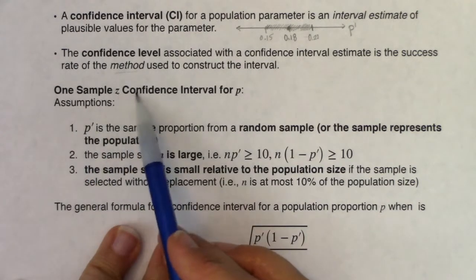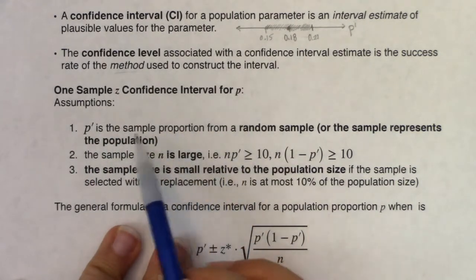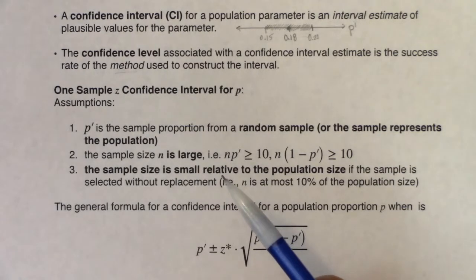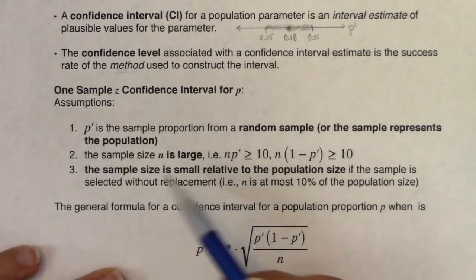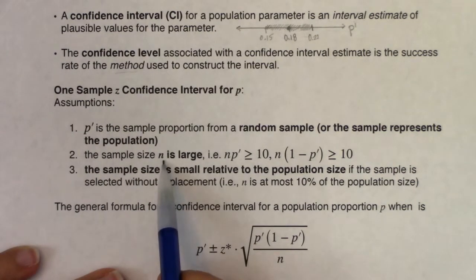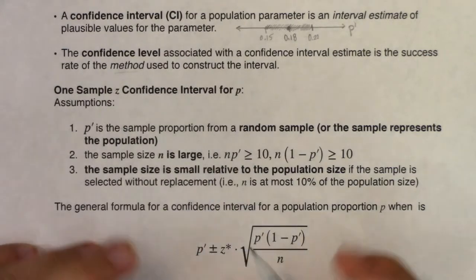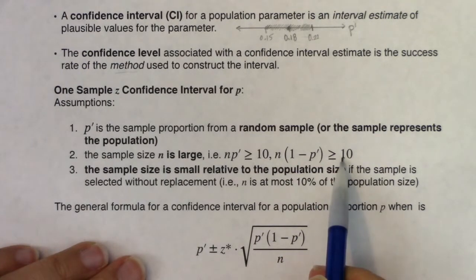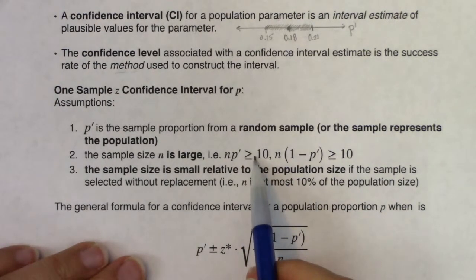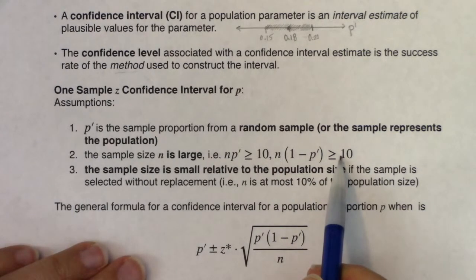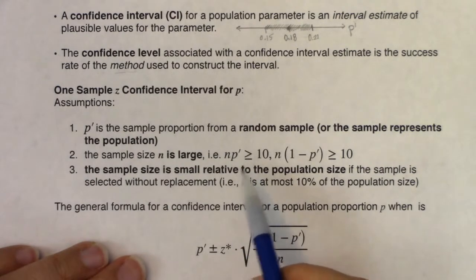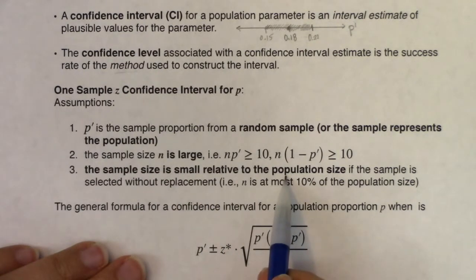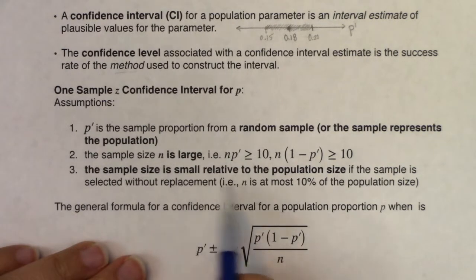For a one-sample z confidence interval for p, the first assumption is that the sample was randomly selected or represents the population. Second, the sample size must be large enough — in proportion land that means at least 10 successes and 10 failures: np-prime ≥ 10 and n(1 − p-prime) ≥ 10. We use p-prime because we only know the statistic, not the parameter.